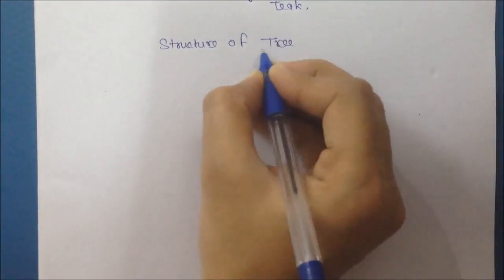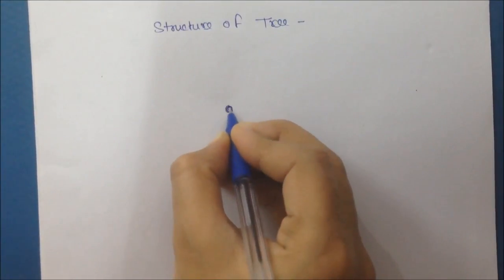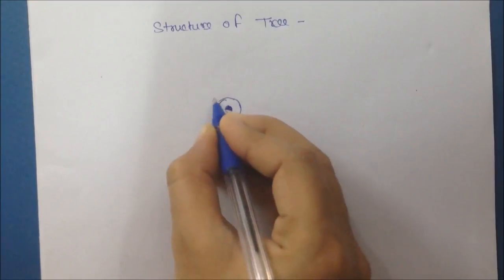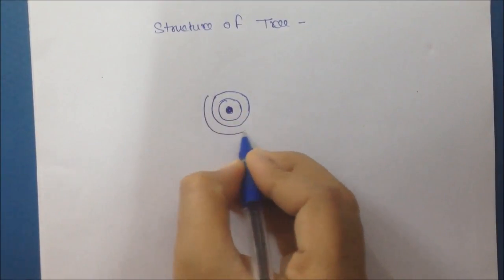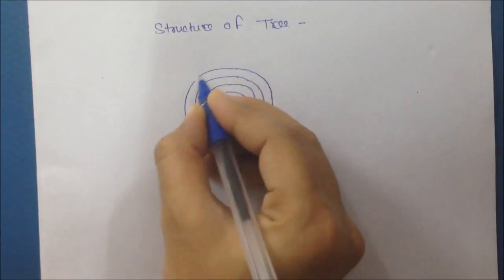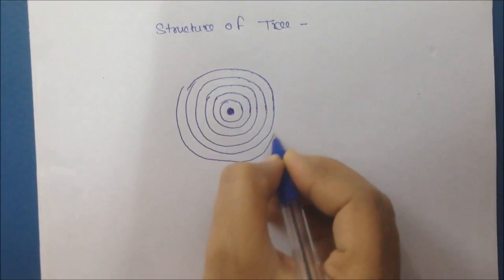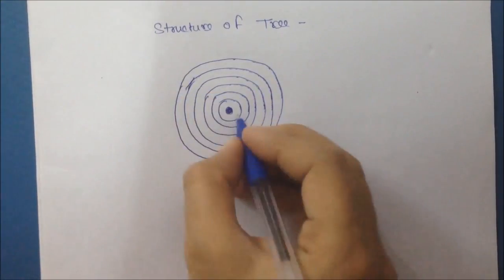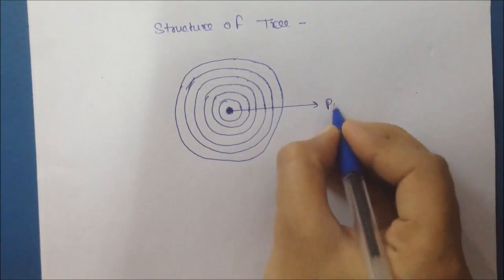Second is structure of trees. First point is pith. Innermost portion of trees is called pith and it is surrounded by rings which we call annular rings. Annular rings indicate a tree's age.